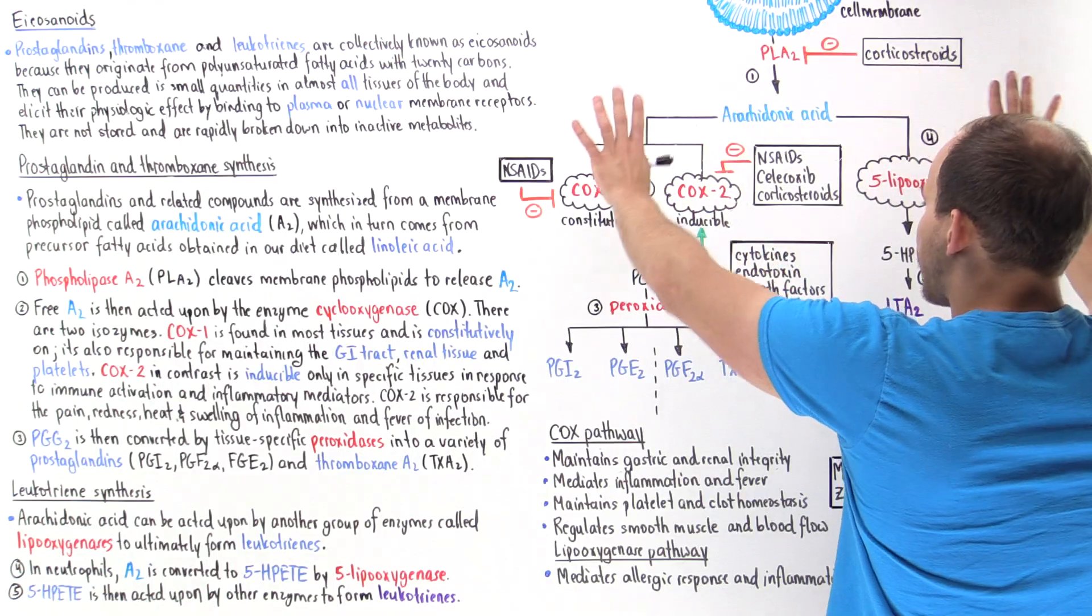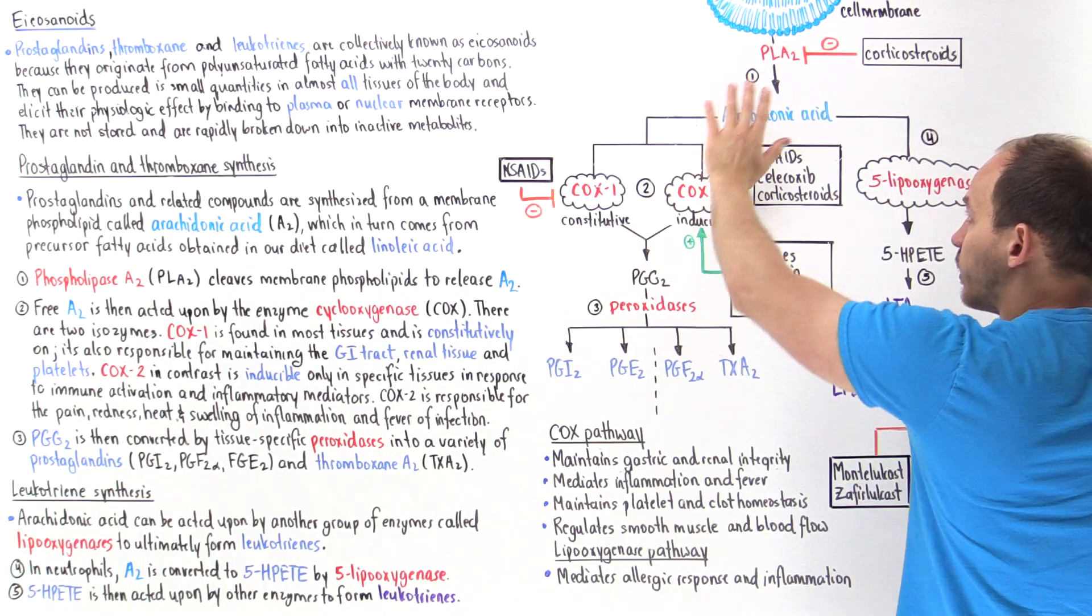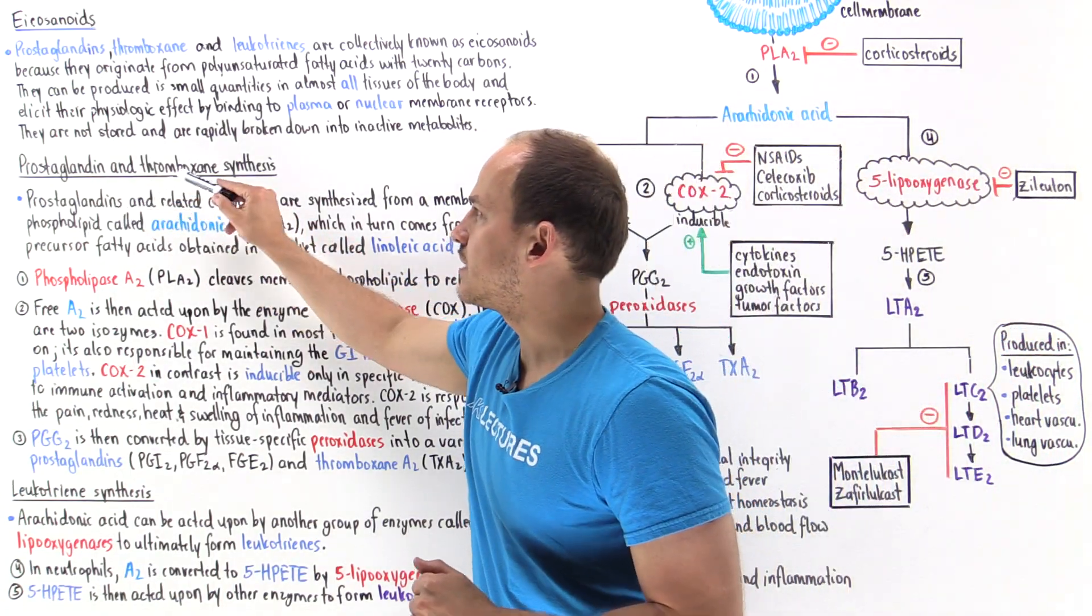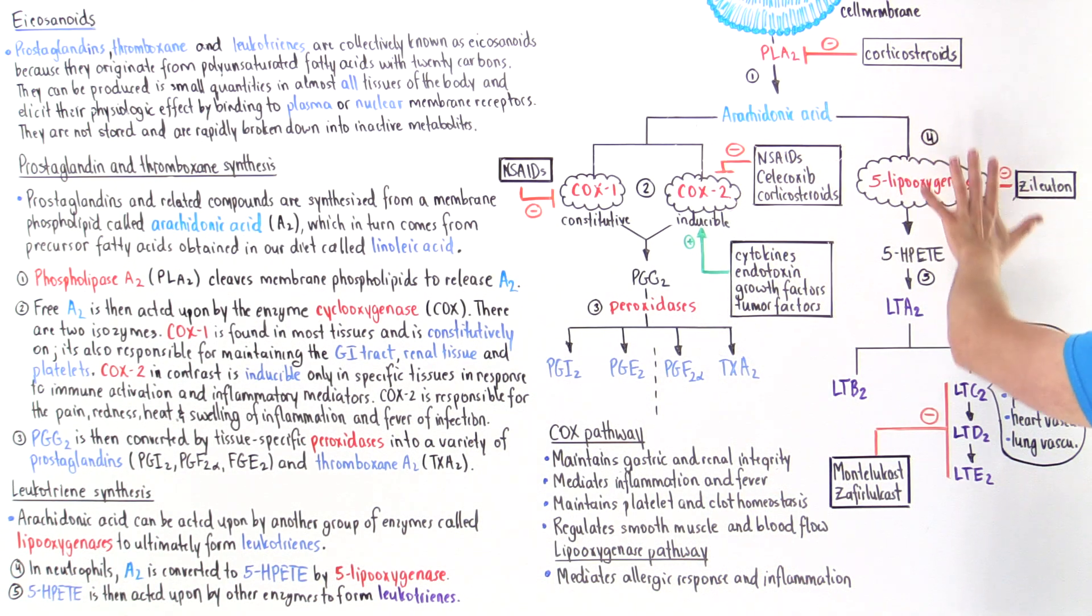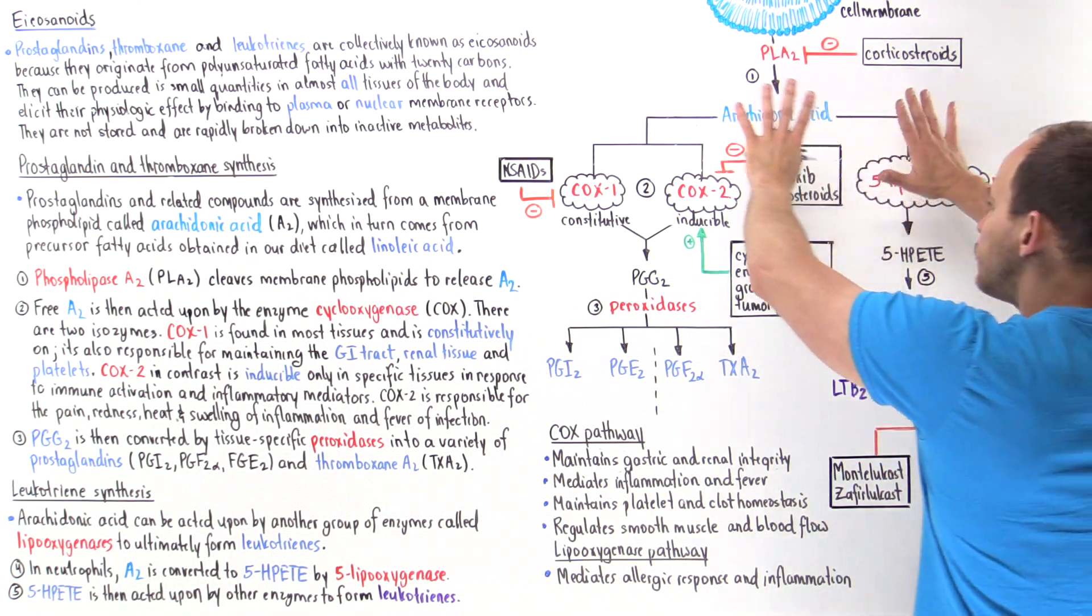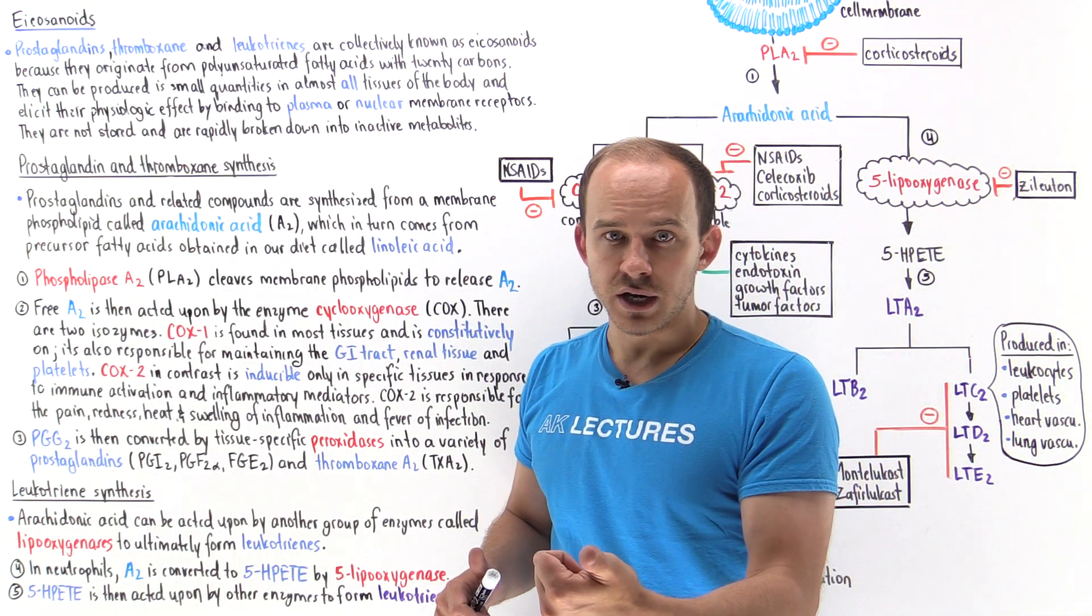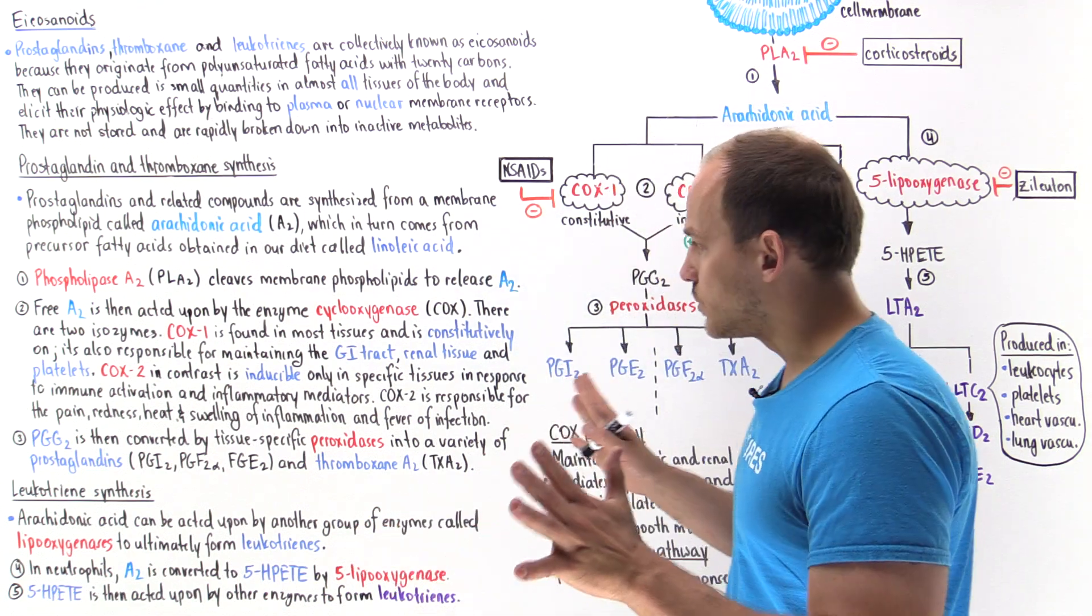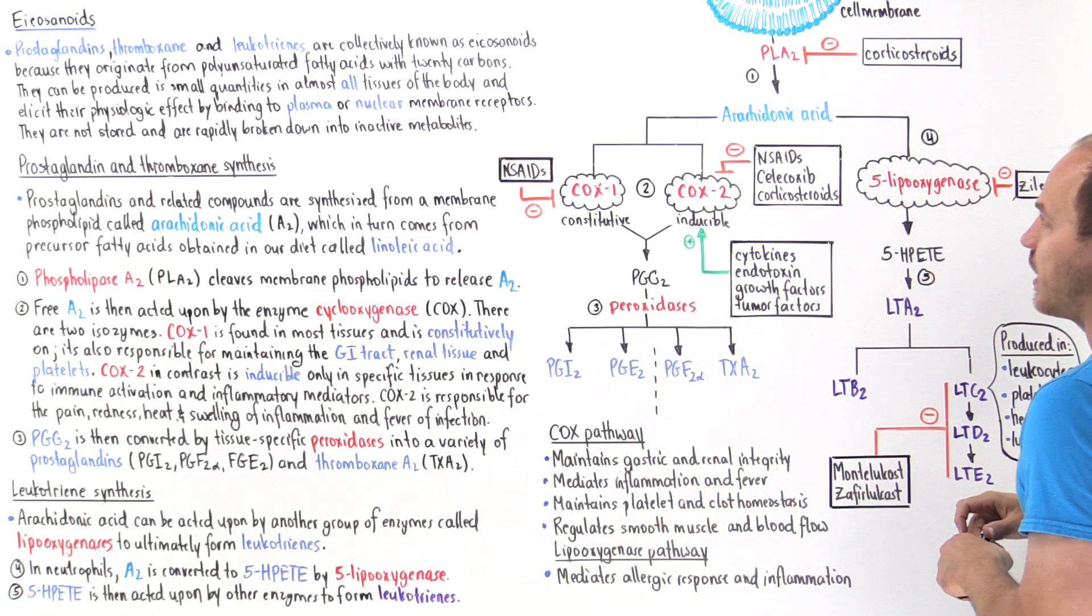Arachidonic acid can take one of two pathways. We can either take the cyclooxygenase pathway, the COX pathway, which will synthesize prostaglandins and thromboxane, or the lipoxygenase pathway that will synthesize leukotrienes. The pathway it takes depends on the cell and tissue we're in and also depends on the pre-existing conditions.